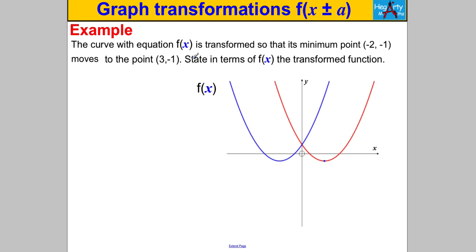For the very last one — pause the video and have a think. We're given f(x) and told its minimum point at (-2, -1) moves to the point (3, -1). That point has moved 5 units to the right, so this curve must be the graph of f(x-5). Remember, subtracting 5 inside the brackets moves the whole graph 5 units to the right. And that's it for this video — thanks for watching!